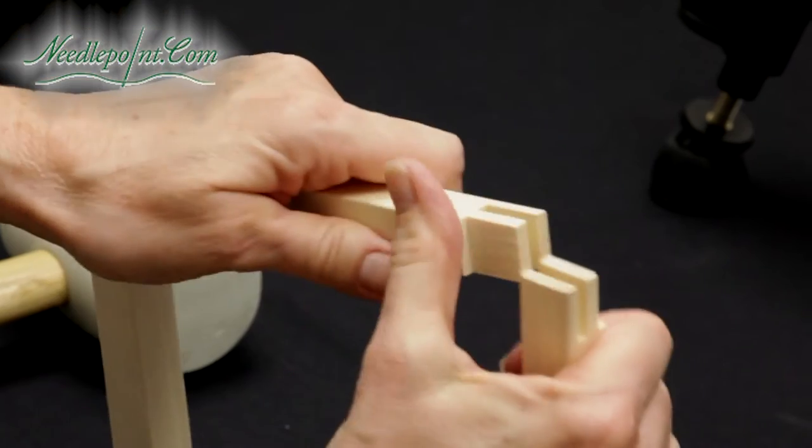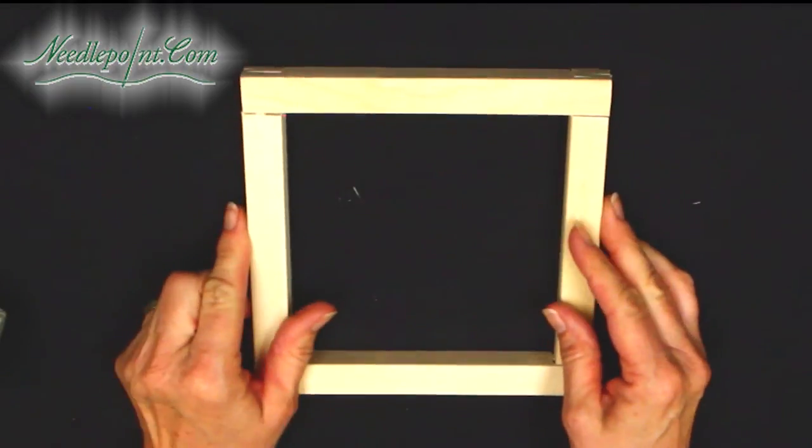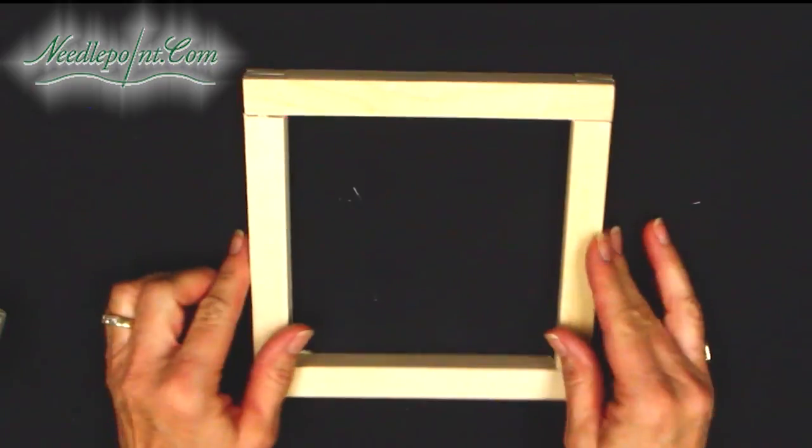Once the first corner is in place, move on to the next piece, connecting that angle together. Wedge all four corners together and voila, you have built a custom set of stretcher bars to fit your specific needlepoint piece.